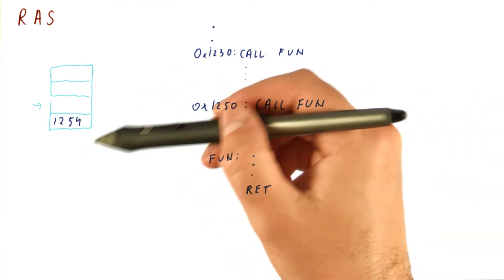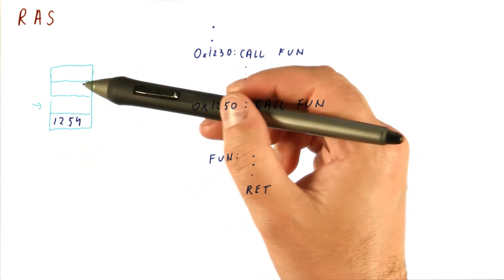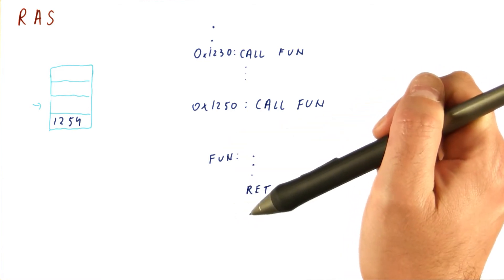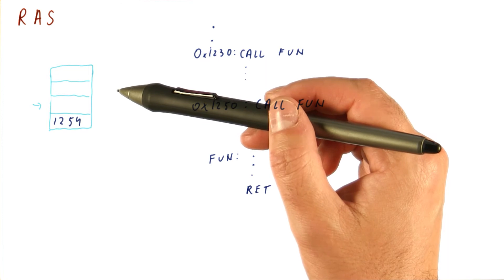So why is this a predictor? Why not just use the actual stack of the program? Well, because this predictor needs to be on chip, very close to where the rest of the branch prediction is happening, and needs to be very small.